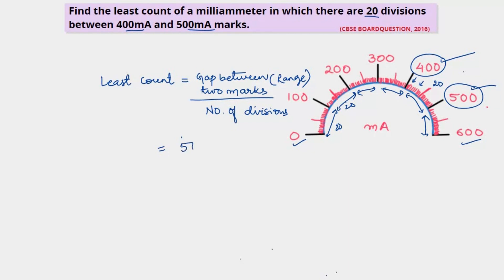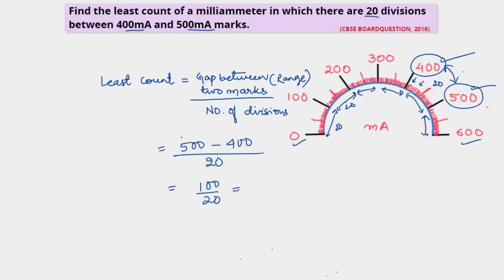So the calculation is 500 minus 400, divided by the number of divisions between 400 and 500 milli ampere, which is 20. That gives us 100 divided by 20, which equals 5. So the least count is 5 milli ampere.